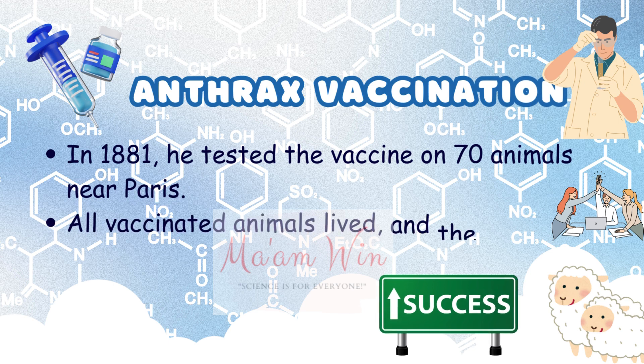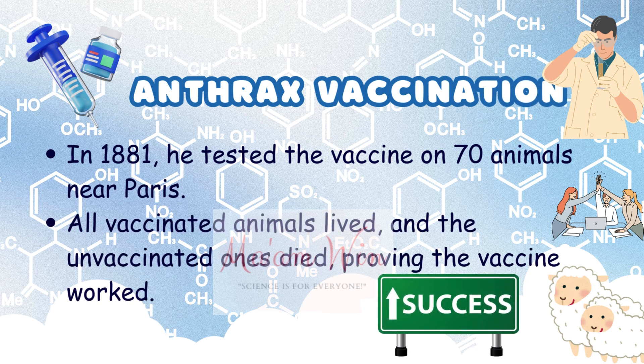Pasteur then created a weakened form of the anthrax germ to use as a vaccine. In 1881, he held a public experiment near Paris where he vaccinated 70 animals. After exposure to the real disease, all the vaccinated animals lived and the unvaccinated ones died. This successful test proved the effectiveness of his vaccine.